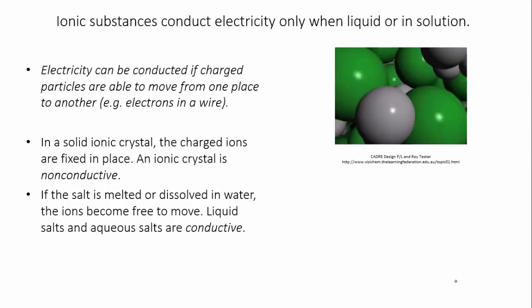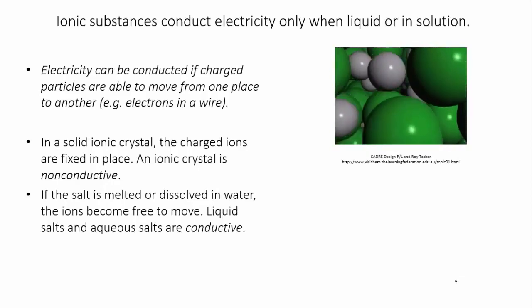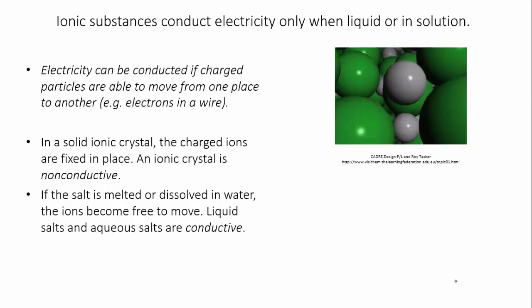If you put two electrodes in a molten salt, the positive ions will travel in one direction, and the negative ions will travel in the other, and so the current is conducted.